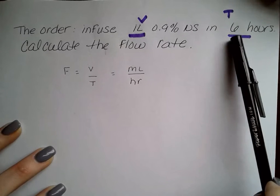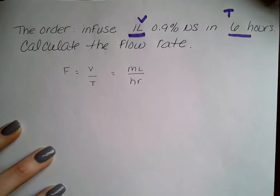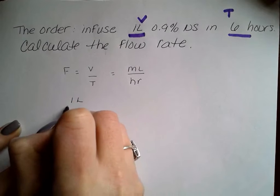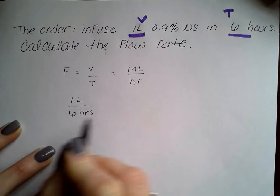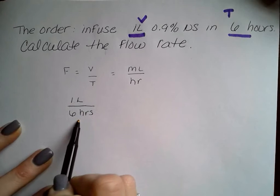So we have volume and time. We put it into the ratio where flow rate is equal to one liter over six hours, which means one liter is going to infuse over six hours.